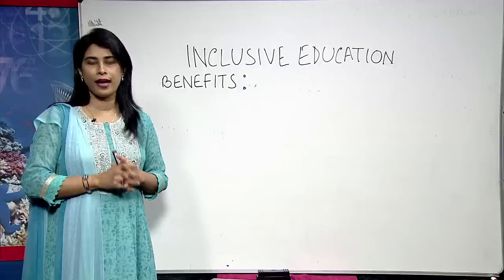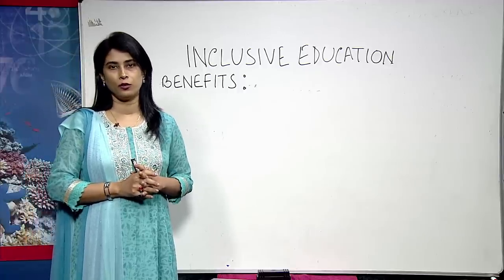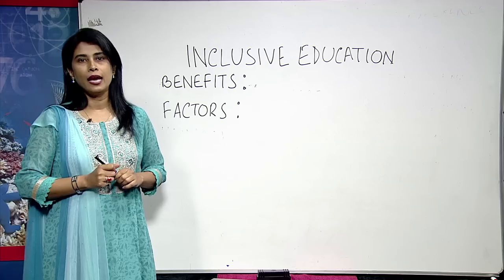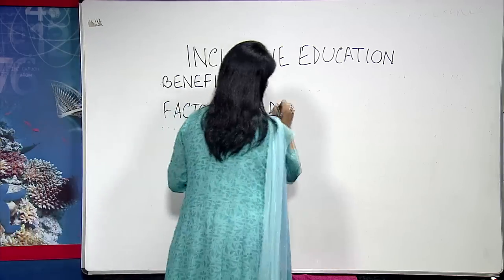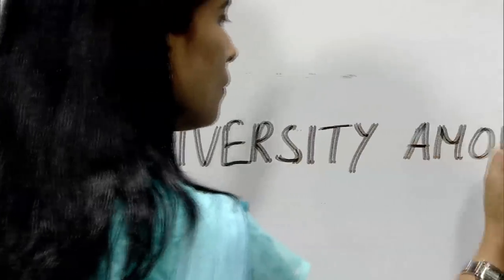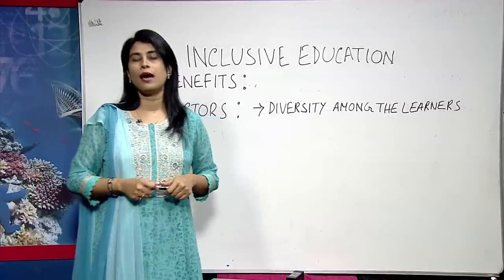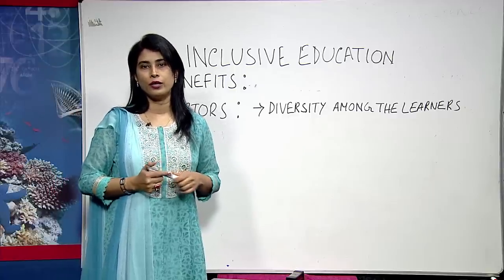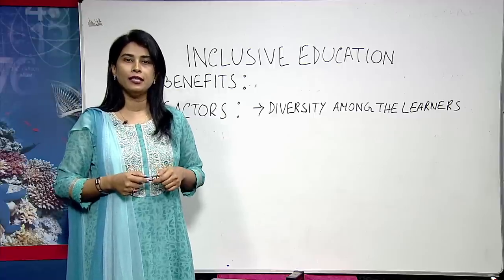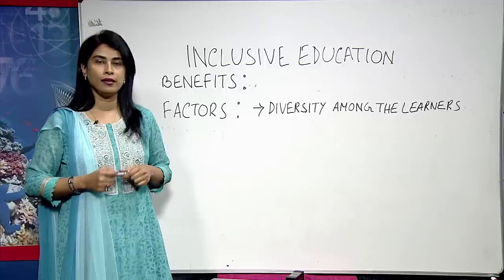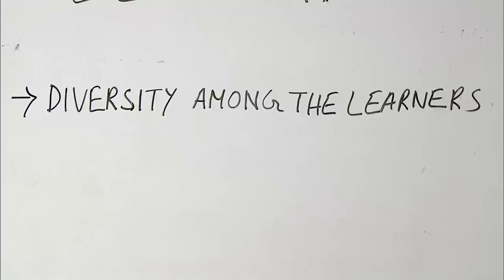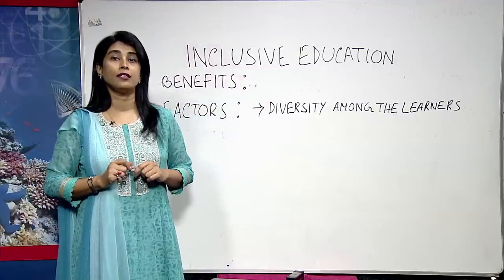Let us discuss about the factors that affect inclusive education. The first factor can be diversity among the learners. There is so much diversity among a group of children belonging to the same age group. Children differ with regard to their home background, motivation and ability to learn, personal attributes contributing to success in academics, attitudes, interests and commitments. This wide variety to be addressed as a group for instruction is a difficult task.